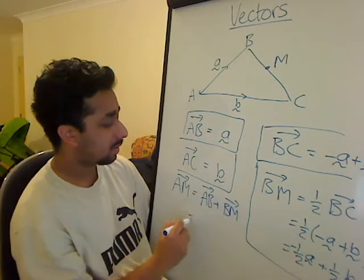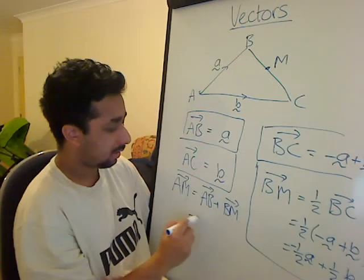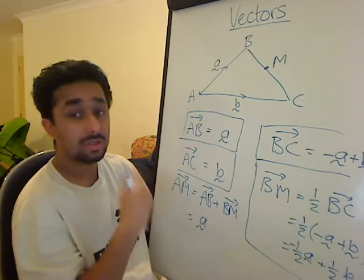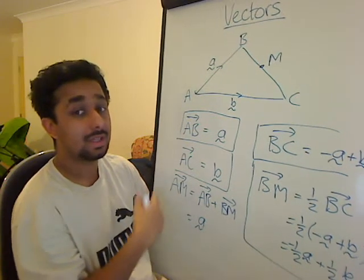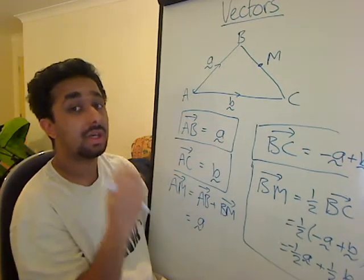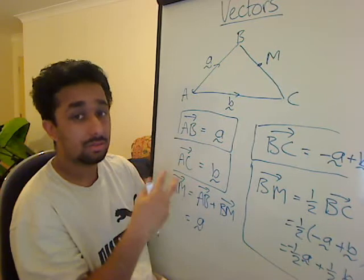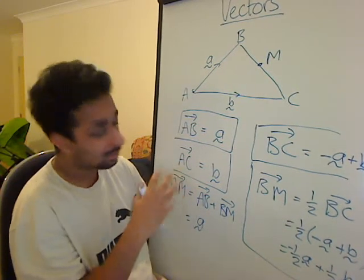Alright? And what is A to B equal to? From A to B, it's equal to vector A. Remember, we're trying to do it in terms of A and B at the end. The vectors A and B, because they are our original train tracks. So it's all based on that.